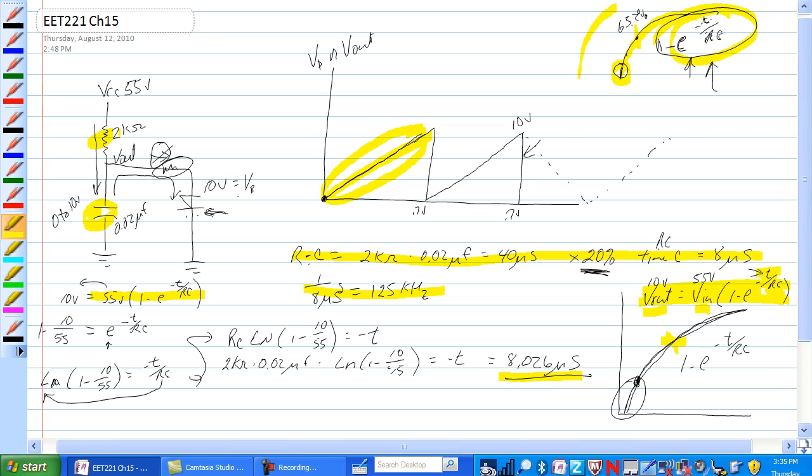We know what RC is, so we're going to solve for minus t. So we take the 1 over and the e and the minus over and we end up changing the 10 over 55 to 1 minus 10 over 55 is equal to e to the minus t over RC.